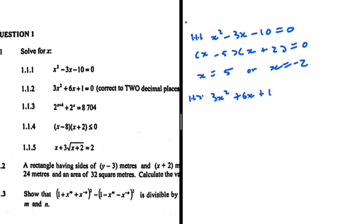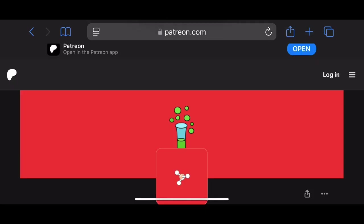...1 equals 0, and we're supposed to solve for x correct to two decimal places.